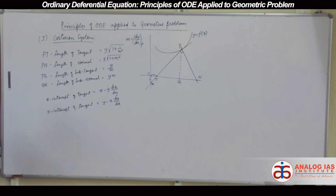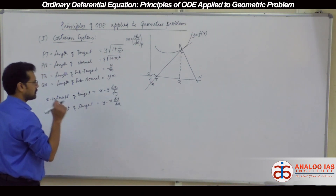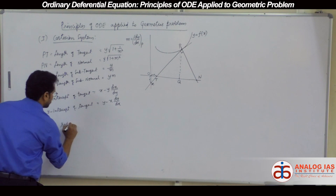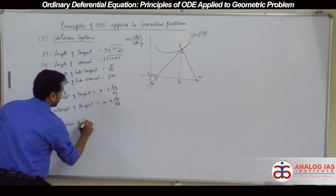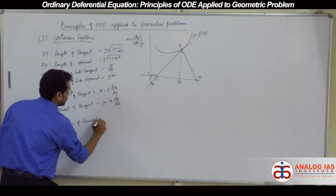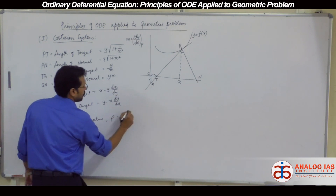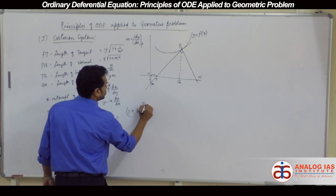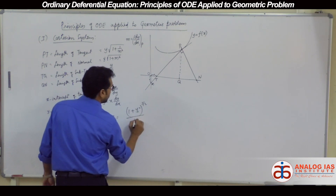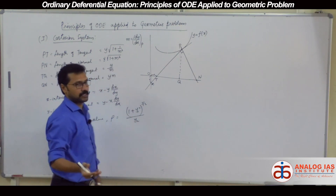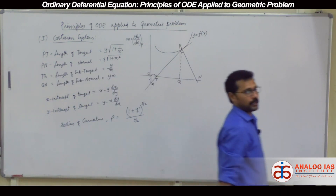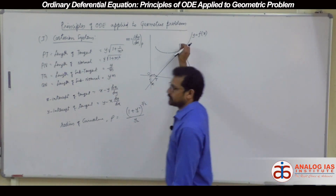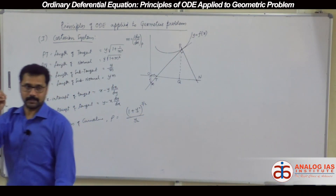Apart from that, one important thing which I asked you to learn already is the radius of curvature. The radius of curvature is given by (1 plus y1 squared) to the power 3/2, divided by y2, where y1 is the first derivative at point P and y2 is the second derivative at point P.